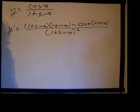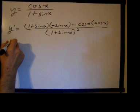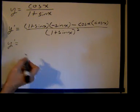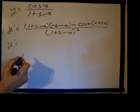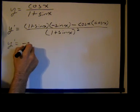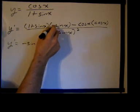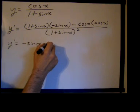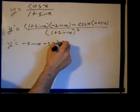I'm going to multiply out the numerator. This is actually going to clean up quite well, so we'll go ahead and do that. We don't always need to, but in this case with trig functions, they will. So we have negative sine of x times 1 is negative sine of x. Negative sine of x times sine of x is negative sine squared of x.